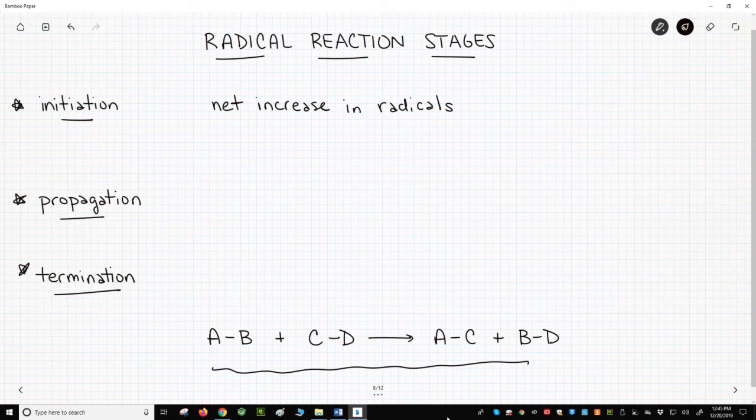Second, propagation. Reactions in the propagation steps result in zero change in the number of radicals in the system. We will create and destroy radicals during propagation, but the net change is zero.